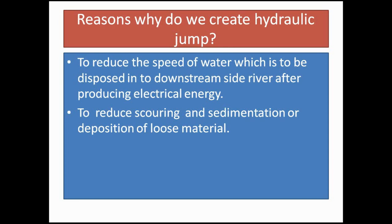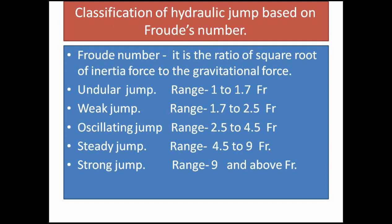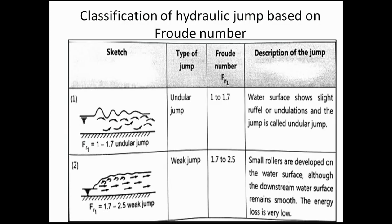Classification based on Froude's number: Froude's number is the ratio of the square root of inertia force to gravitational force. The first type is the undular jump, with a Froude number range of 1 to 1.7, in which small undulations or small ripples are formed on the surface of the water.